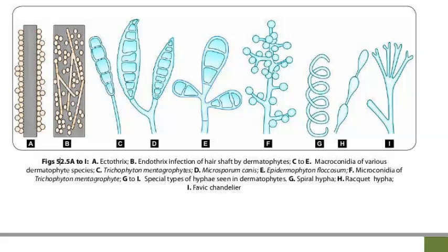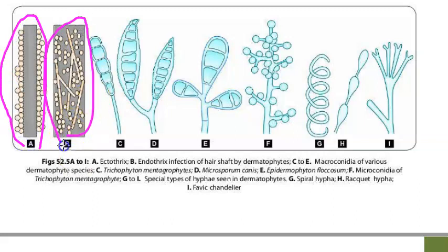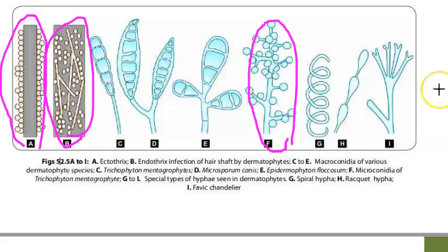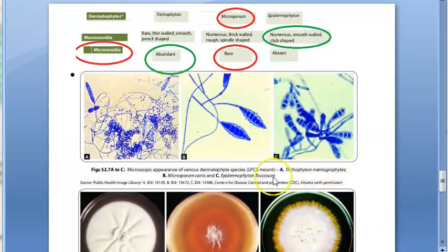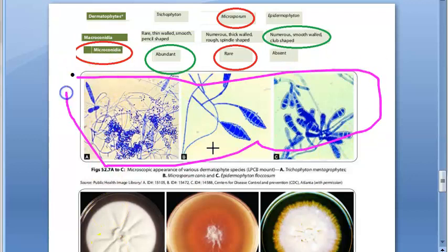Microscopically, you can identify ectothrix versus endothrix patterns. Trichophyton shows abundant microconidia. Special hyphal forms include racket hyphae and the favic chandelier, as well as spiral hyphae. The LPCB mount — lactophenol cotton blue mount — is used to stain and examine these fungal structures.